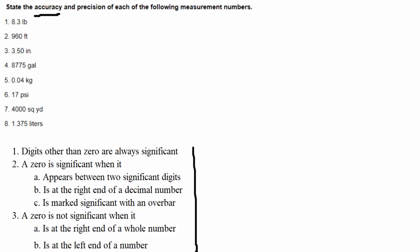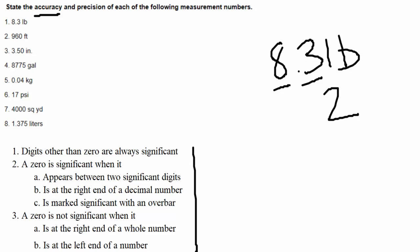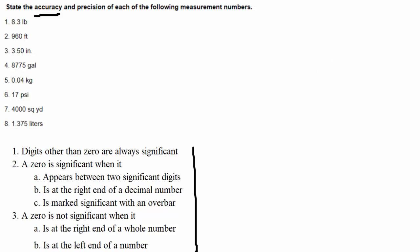Now let's talk about the accuracy of some example numbers. I have numbers one through eight. Accuracy is just how many significant digits there are, so your answer might be two, three, five — whatever the number is. Looking at number one, 8.3 pounds — this one has no zeros, and anything other than zero is significant, so I have two non-zero digits. The accuracy is two significant digits.